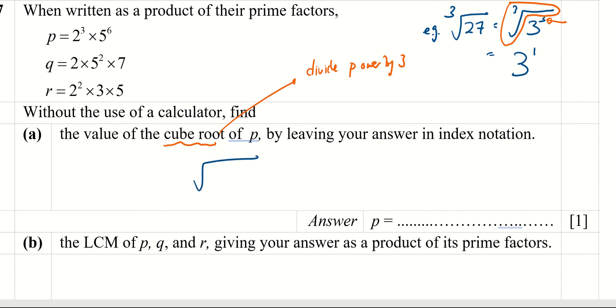So for cube root of p, to remove the cube root, I will have to divide the power by 3. So this is 2 to the power of 1 times 5 to the power of 2.